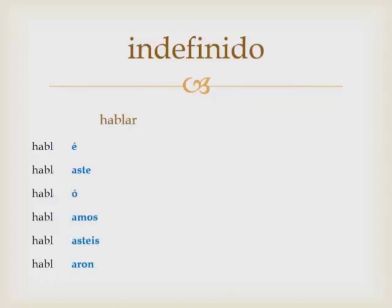So our AR endings are: -é, -aste, -ó, -amos, -asteis, and -aron. Notice that é and ó have an accent.